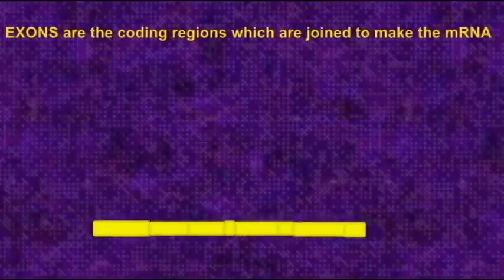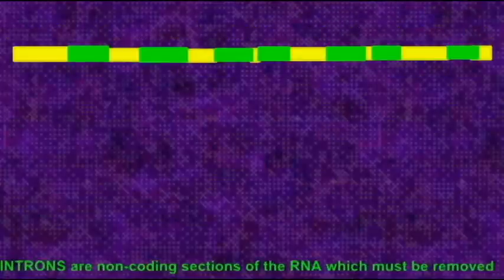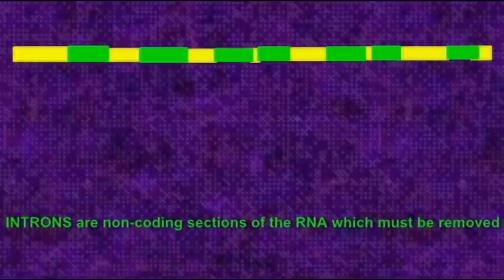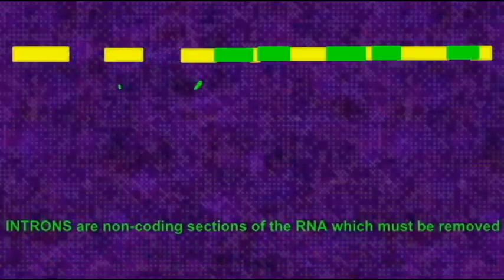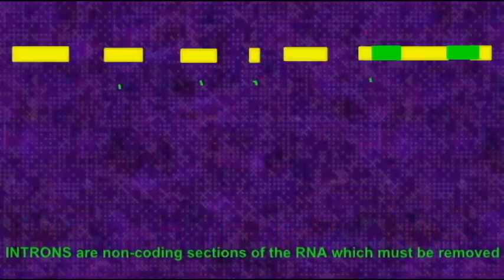Before the remaining sections, the exons, can be joined. The exons are the regions which are coding, which will carry the instructions on how to construct a protein. And so only after the introns are removed and the exons are joined does this become an mRNA, which can be translated into a protein.